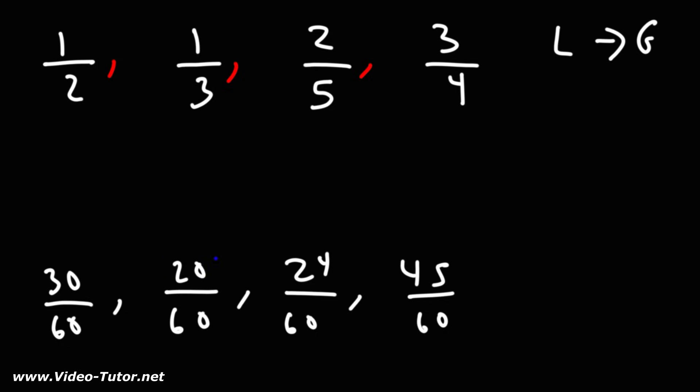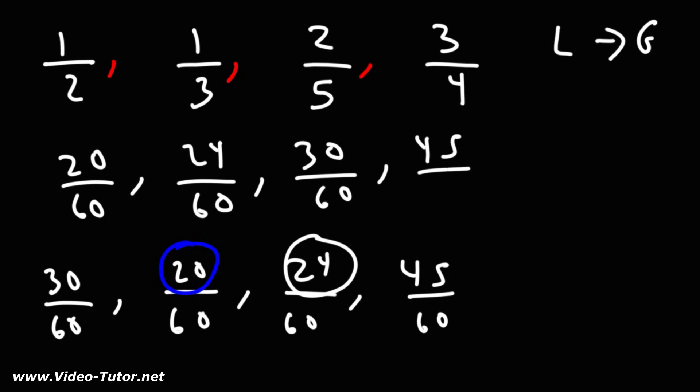The lowest of the four numerators is 20. So we're going to put that first, 20 over 60. The next highest number is 24 and then it's 30 over 60 and then 45 over 60.